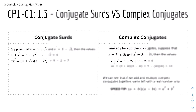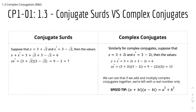Here we have conjugate surds versus complex conjugates. For conjugate surds, suppose x = 3 + √2 and the conjugate of x = 3 - √2. Then x plus its conjugate equals 6, because the surds cancel out. And x times its conjugate equals 7, because 3 × 3 = 9 and √2 × (-√2) = -2, giving 9 - 2 = 7.